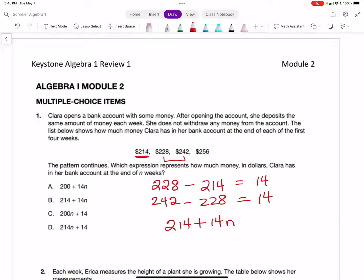If you put in $1 for your first N, you should get that $228. And then if you put in $2 for your second N, $242. And if you put in $3 for your third N, you're going to get $256. This first one has to be zero, so that way you get that initial deposit of $214. We're looking at answer choice B for this question.